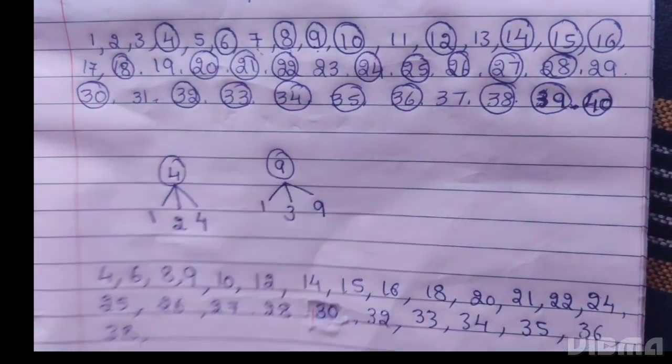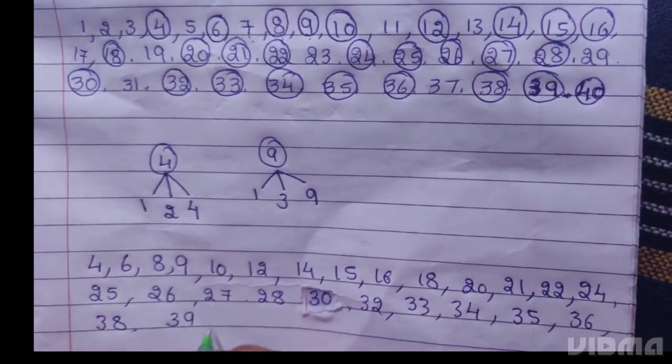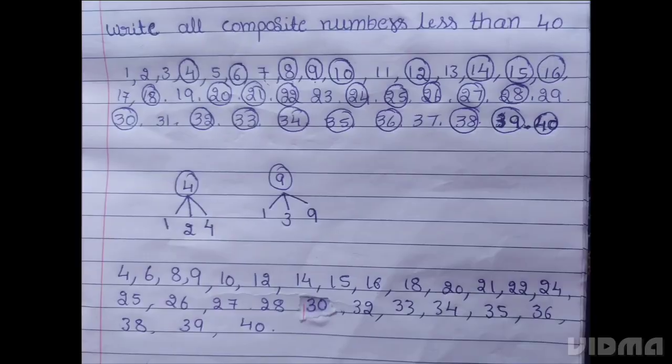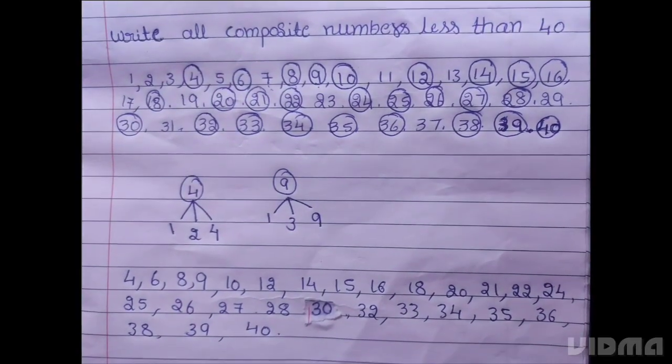38, 39, 40. These are composite numbers less than 40.